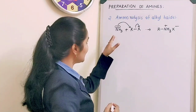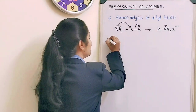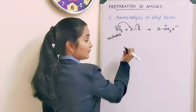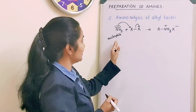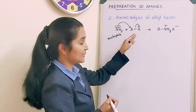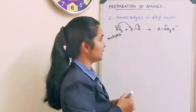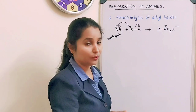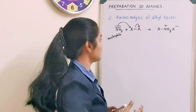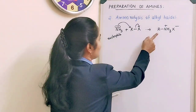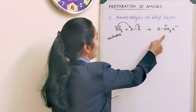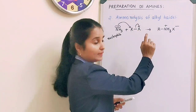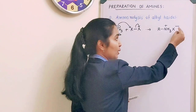Ammonia acts as a nucleophile and attacks the alkyl halide to form an intermediate R-NH₃⁺ X⁻. In this intermediate, R is bonded to NH₃⁺, and the electrons are shifted onto X forming a negative charge.